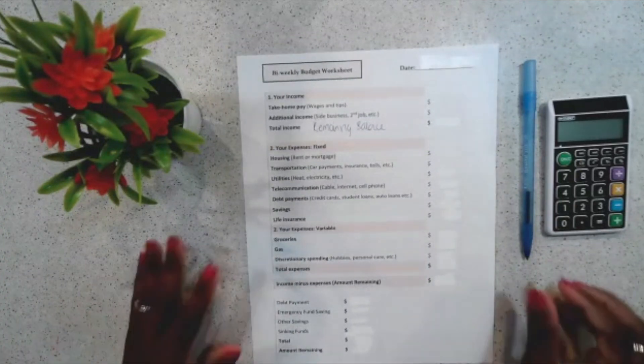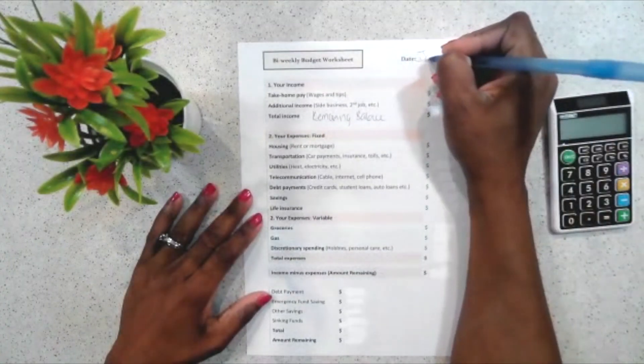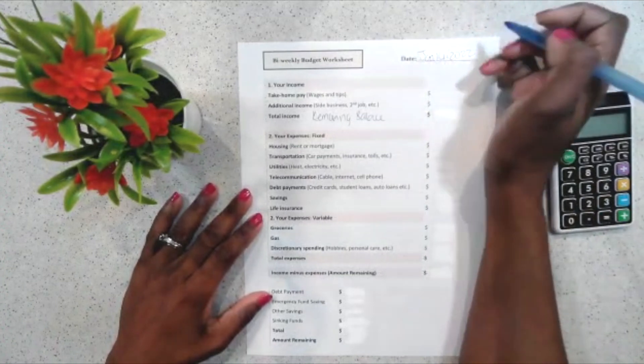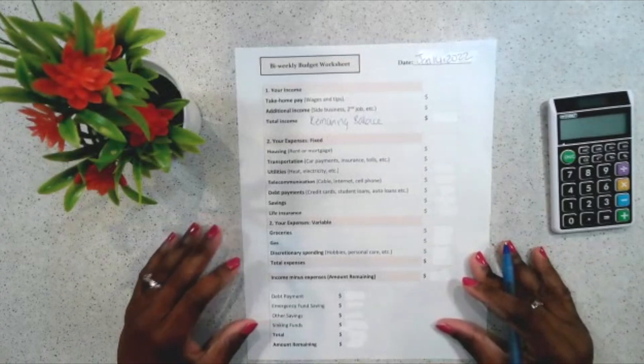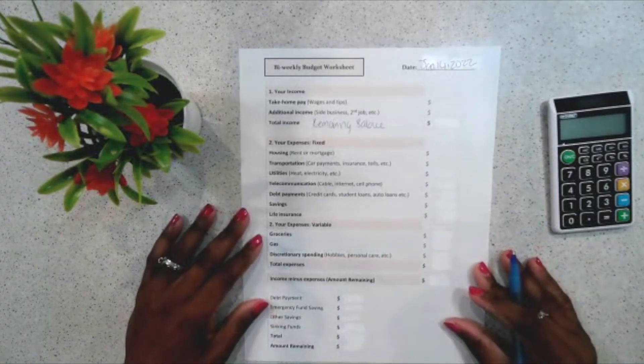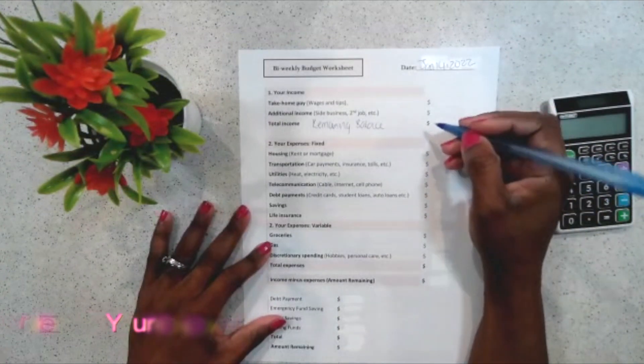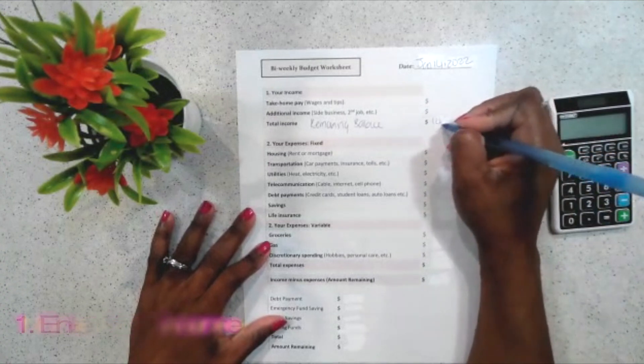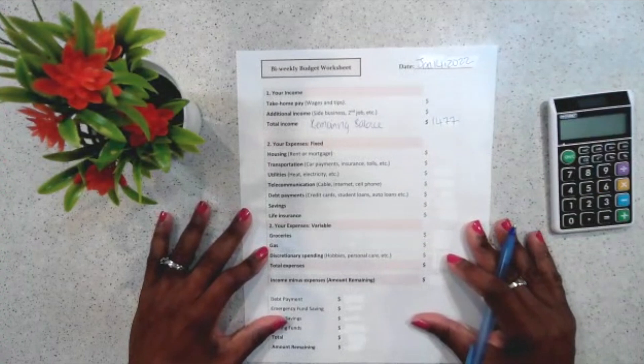So, first thing I will do is enter the date. So, I am going to enter the date in which I was paid January 14, 2022. And you can enter the date in which you were paid. The next thing that I will be doing, I will be entering my income. So, I am going to be entering my remaining balance. So, my remaining balance is $1,477. So, that amount has been entered.